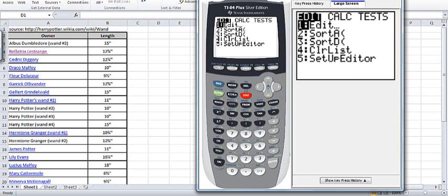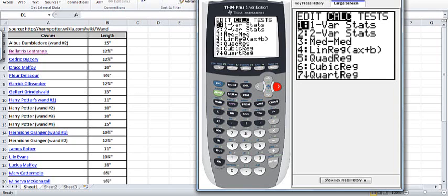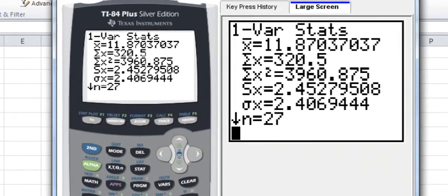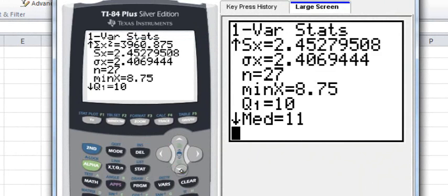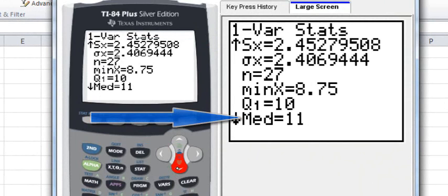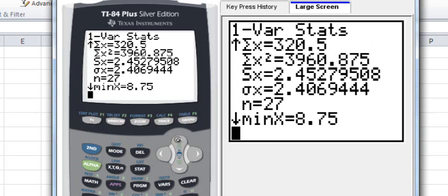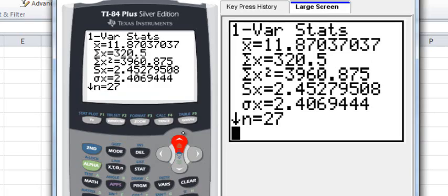So I'm going to go to stat, calculate, and I want to calculate one variable statistics on L1. So I hit second, one. If you hit enter, there is x-bar. So the mean wand length is 11.87 inches. I have 27 observations. There is my median, 11 inches, and so on. So the median is 11, and the mean is 11.87, or we can round that to 11.9.